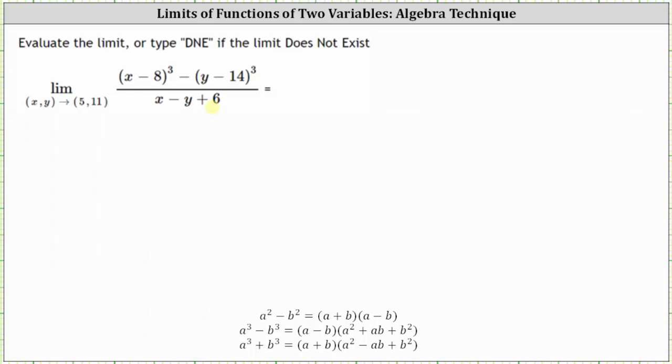And this is another example of one of those functions where we can factor, simplify, and then find the limit by performing direct substitution. Looking at the numerator, we have a difference of cubes, and therefore we'll begin by factoring the numerator. The difference of cubes formula is shown here below. Where in our case, a is equal to x minus 8, and b is equal to y minus 14.